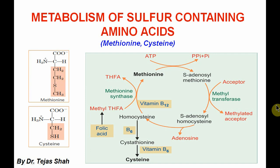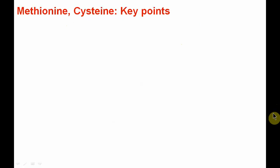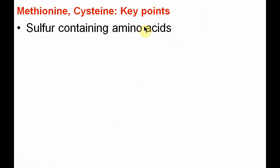Hello everyone, welcome to my channel Biochemistry by Dr. Teja Shah. Today we'll see about the metabolism of sulfur-containing amino acids, that is methionine and cysteine. Let us first discuss a few key points: both methionine and cysteine are sulfur-containing amino acids.